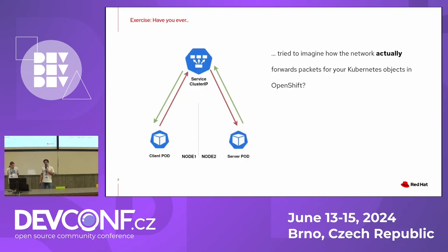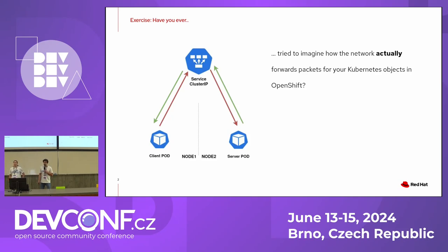Let's start with a simple exercise. Let's say you have a tiny cluster, two nodes, a couple of pods in the cluster. In this example, a client pod and a server pod and a service. The client tries to access the server via the service. So traffic flows from the client to the service to the server and back.